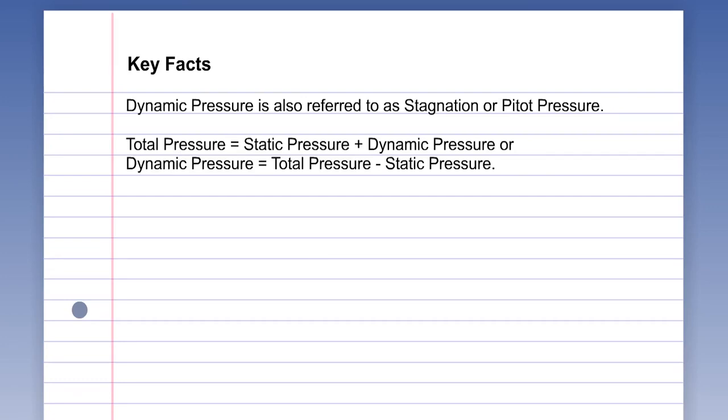Other terms for total pressure are stagnation, or more usually, pitot pressure. The equation total pressure equals static pressure plus dynamic pressure can be rearranged to show that dynamic pressure equals total pressure minus static pressure.